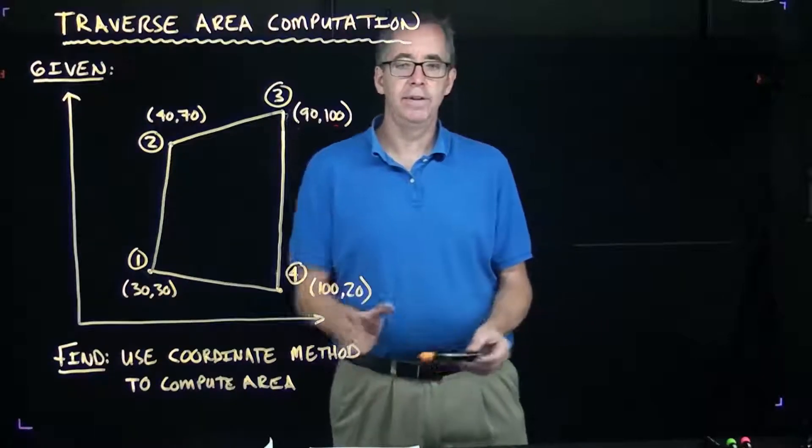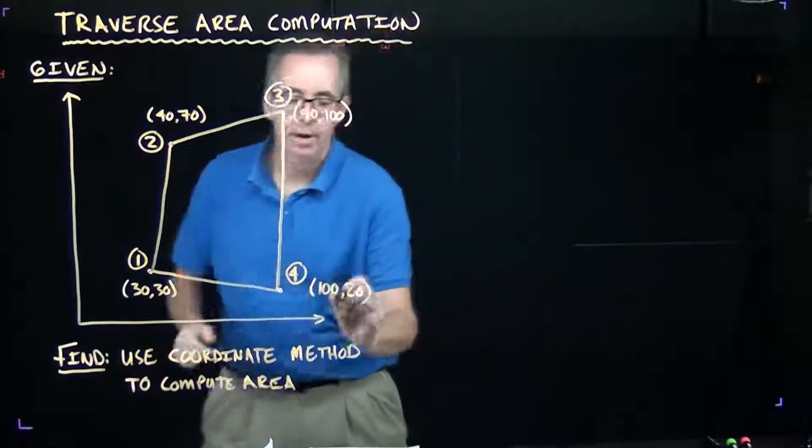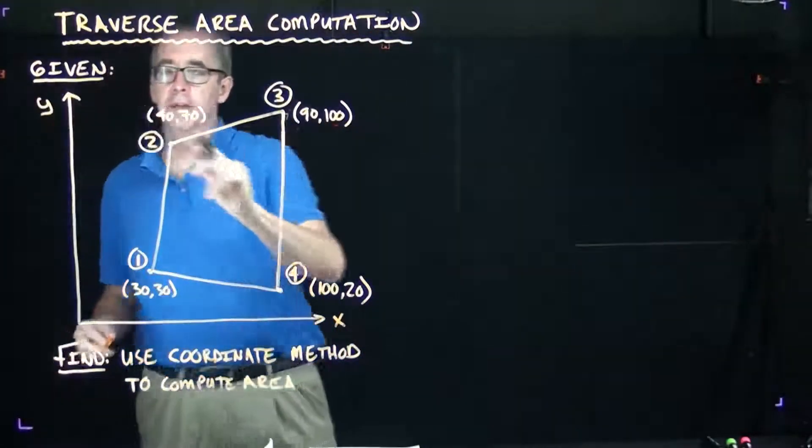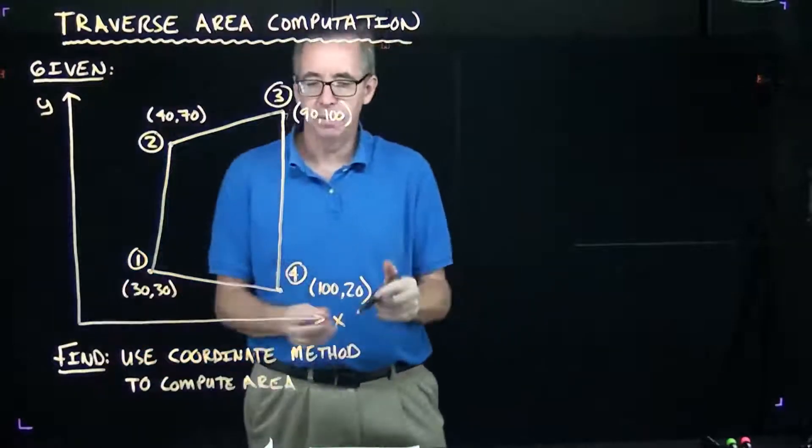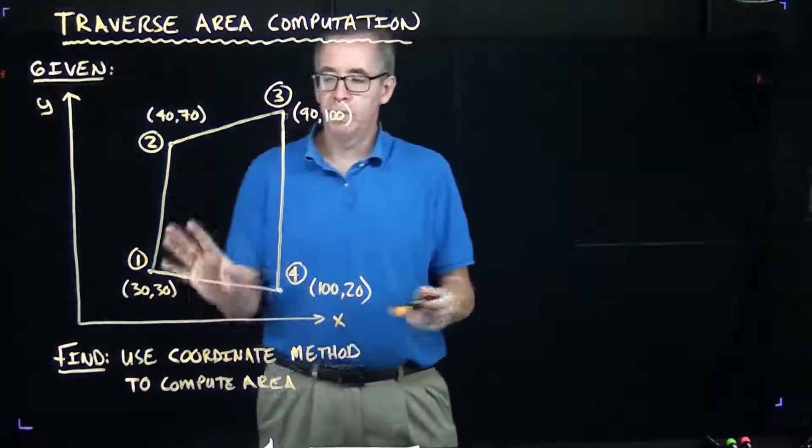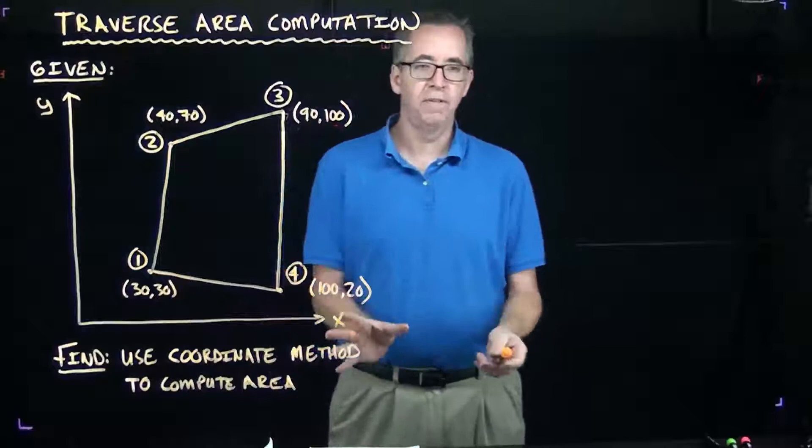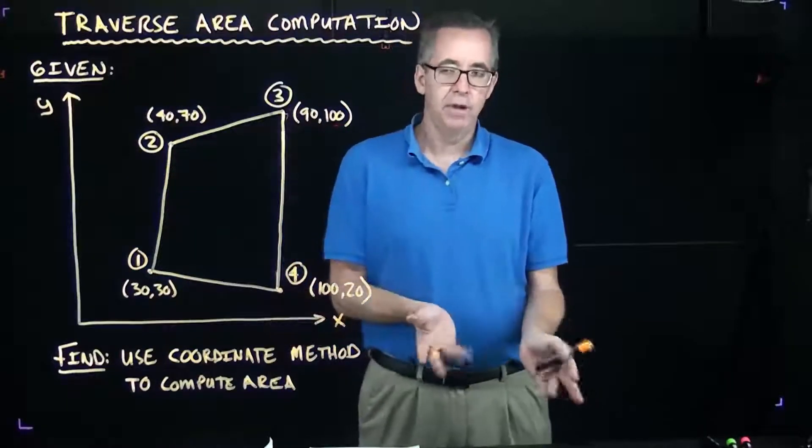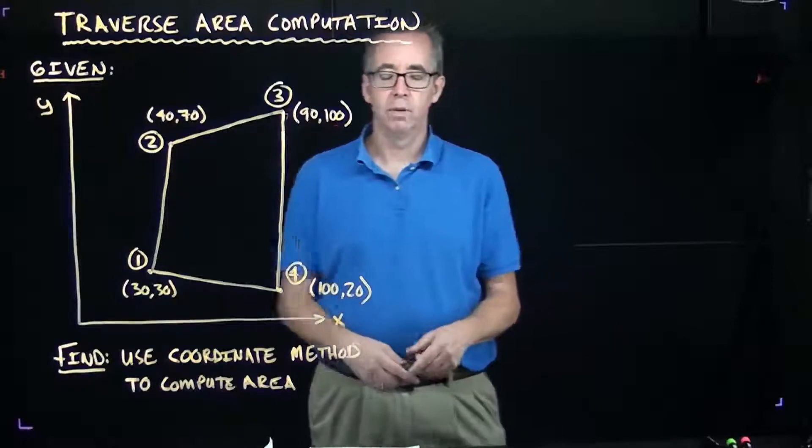Now, in this example, we have the X, Y coordinates here. This is just an example, not taken from an actual survey. From a survey, one of the outputs is you take distances and angles, and you convert those values to coordinates.